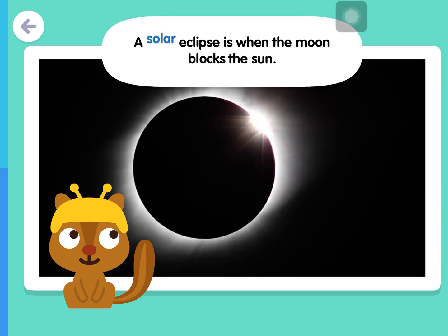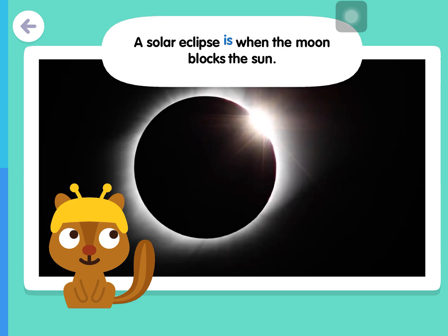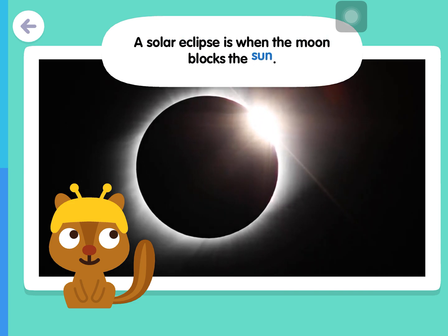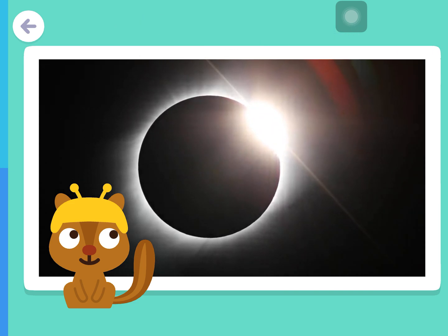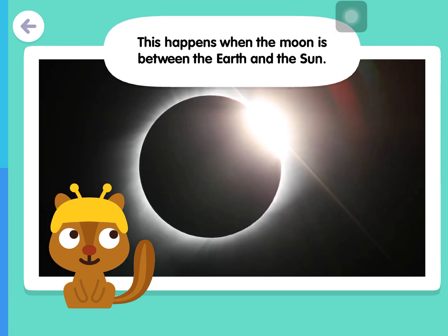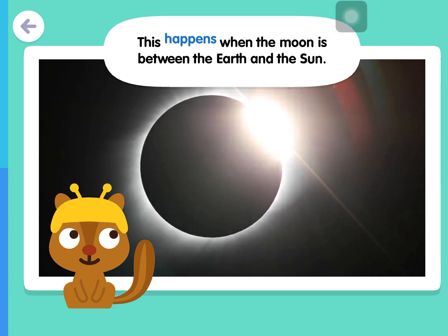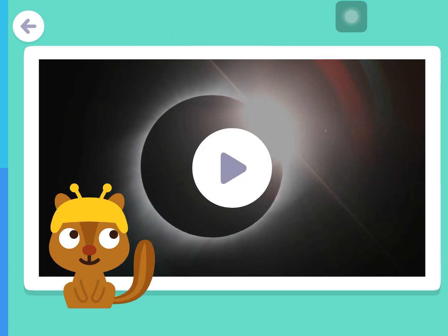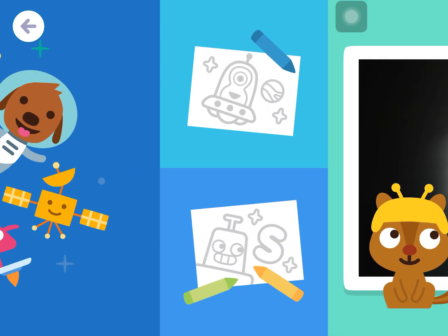A solar eclipse is when the moon blocks the sun. This happens when the moon is between the Earth and the sun.